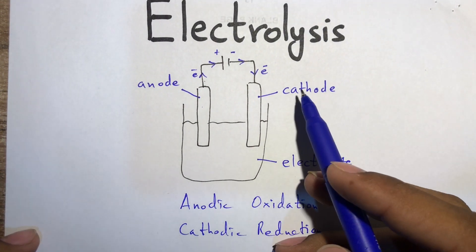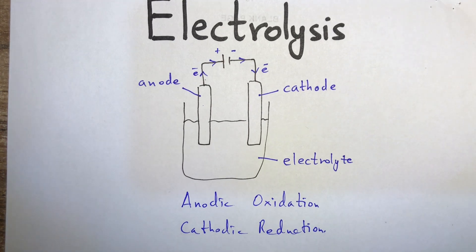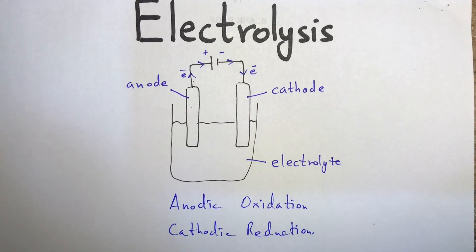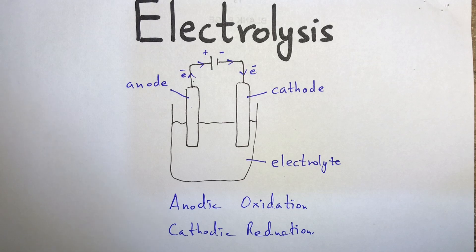At the cathode, metal atoms are usually formed because metal ions gain electrons. Metal ions are positive ions; they gain electrons to form metal atoms, and the metal is either deposited on the electrode or forms a molten layer. If it's a non-metal positive ion, for example hydrogen, then hydrogen ions form hydrogen gas which leaves the electrolyte as bubbles.